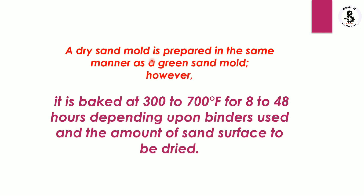In dry sand molding, the mold is prepared in the same manner as green sand molds, but it is baked at 300 to 700 degrees Fahrenheit for 8 to 48 hours, depending on the binders used and the amount of sand surface to be dried. This converts the green sand mold into a dry sand mold, which is why the process is known as dry sand mold casting.